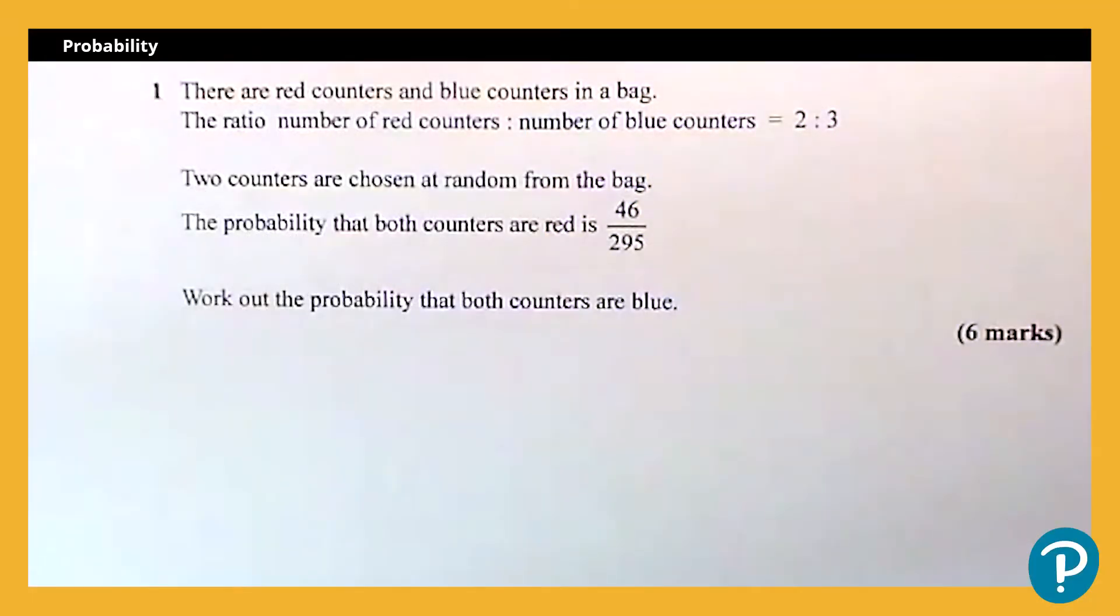Okay, so we're looking today at a probability problem. Let's read the question through and think about how we're going to solve. We've got red counters and blue counters in a bag. The ratio of the number of red counters to the number of blue counters is two to three.